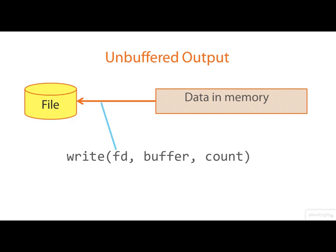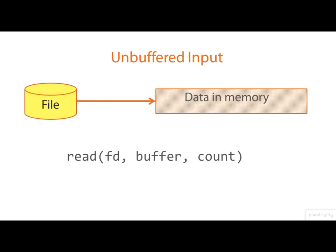Once we've got a file open, we can write to it, specifying the open file descriptor, a pointer to the buffer where the data is held, and a count specifying the size of the buffer. Don't specify a length that's longer than the buffer — the compiler won't complain, but at runtime you'll either get a memory violation or you'll end up writing out whatever happens to follow the buffer in memory. There's no format conversion going on here and no user-space buffering; it's just raw binary output.